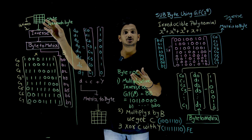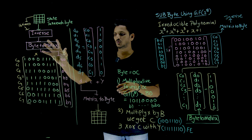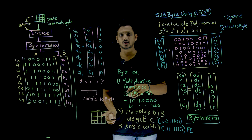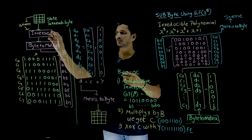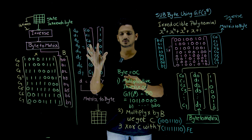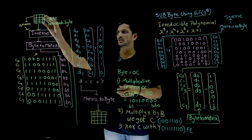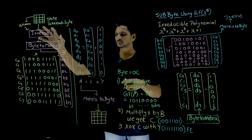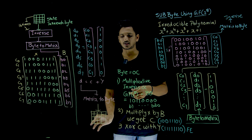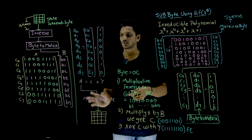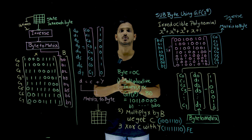This is the state. In each state we are having 16 bytes. Take the first byte, do the process, obtain the substitution byte — byte transformation we are doing. Take the second byte, apply the process and you are going to get the second substitution byte. Take the third byte — like that you have to take all 16 bytes, apply the process, and you are going to get 16 output bytes. This is the ciphertext which you are going to get after doing the substitution byte using GF of 2 power 8.